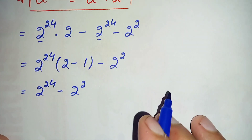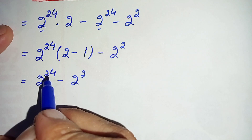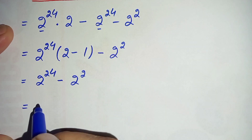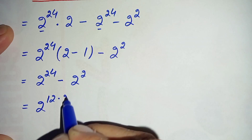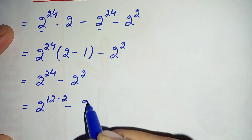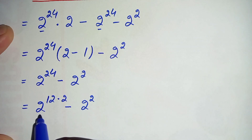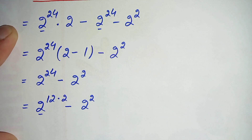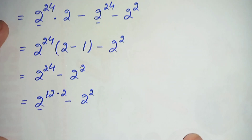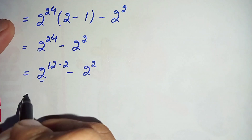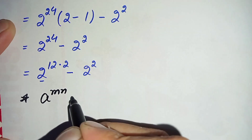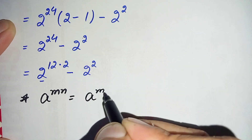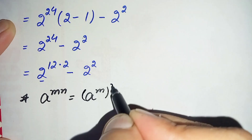Now we will factorize by writing 24 as 12 times 2, so this becomes 2 raised to power 12 times 2, minus 2 raised to power 2. We will use the exponential property: a raised to power m times n can also be written as a raised to power m, whole raised to power n.